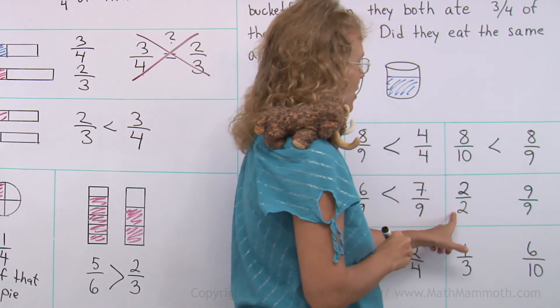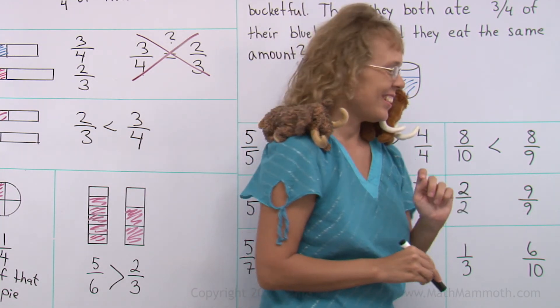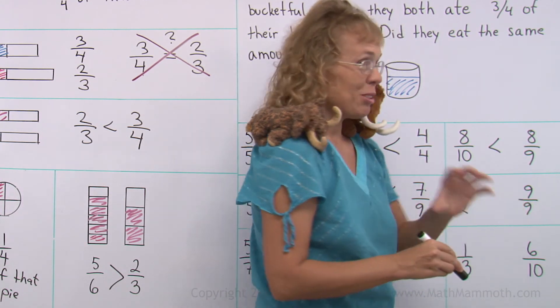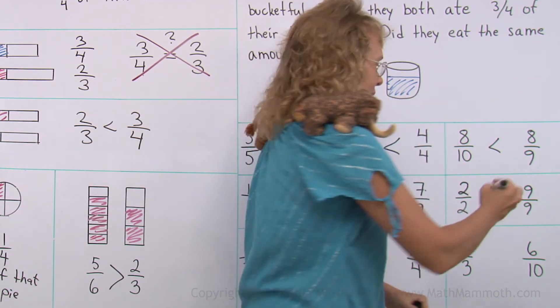Two-halves and nine-ninths. Don't get fooled. Nine-ninths is the same as one whole pie. Now, two-halves is also one whole pie. These are equal.